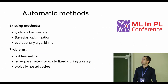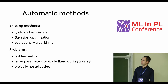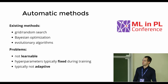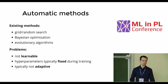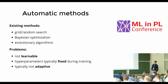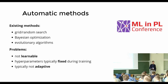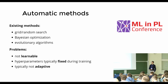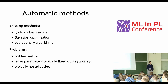So as I said there is a need for automatic methods, and there already are some. There are simple ones like grid search and random search, more sophisticated and data-efficient ones like Bayesian optimization, and more parallelizable ones like evolutionary algorithms. But those algorithms have a number of problems. First, they are typically not learnable — you cannot transfer knowledge learned by tuning one architecture to another. Also, typically the hyperparameters are fixed during training, and those methods cannot benefit from observing how training progresses to tune hyperparameters adaptively.